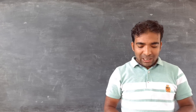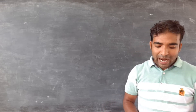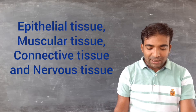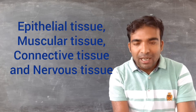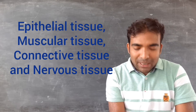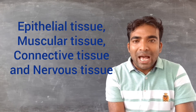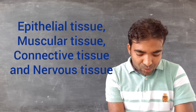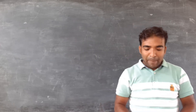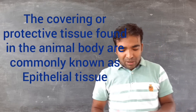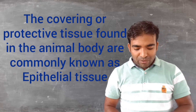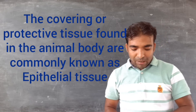We can classify the animal tissues into the following groups: epithelial tissue, connective tissue, muscular tissue, and nervous tissue. First we will discuss about the epithelial tissue - the covering or protective tissues found in the animal body are called epithelial tissue.